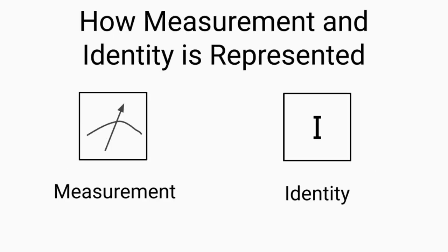Finally, let's take a look at how measurement and identity are represented. Measurement is primarily represented by a box with a curve and an arrow going through that curve in the middle. The measurement symbol typically varies in quantum circuits, but most will have the sort of arc with at least a line going through that arc in the middle of a box. Second, we have identity, which is represented with simply a box with an I in the middle of the box.